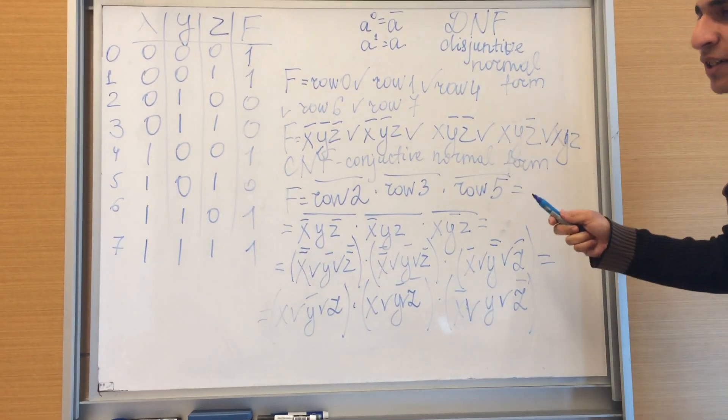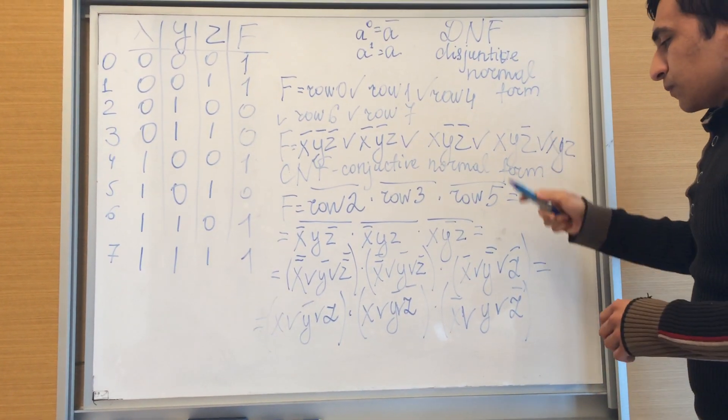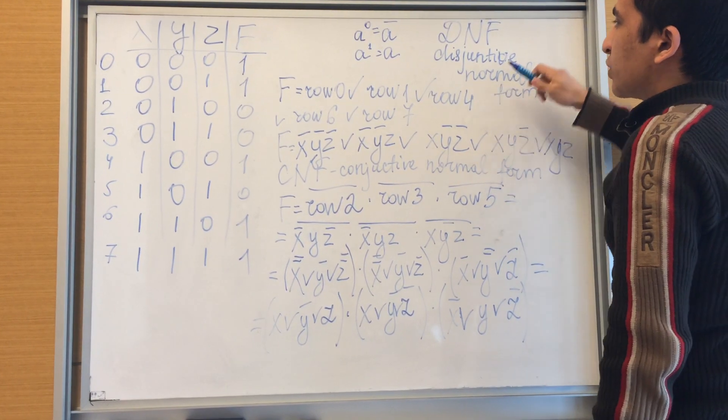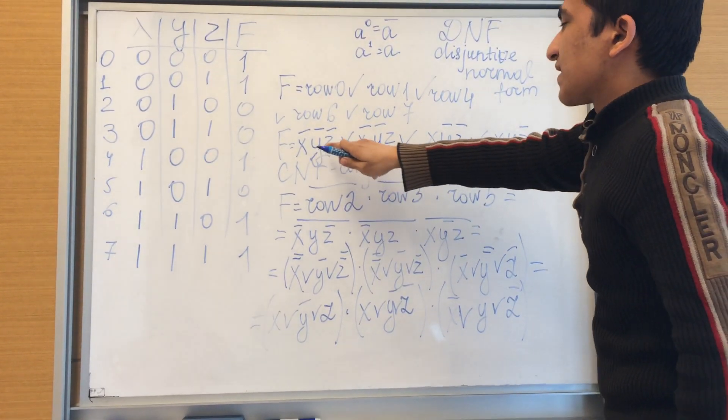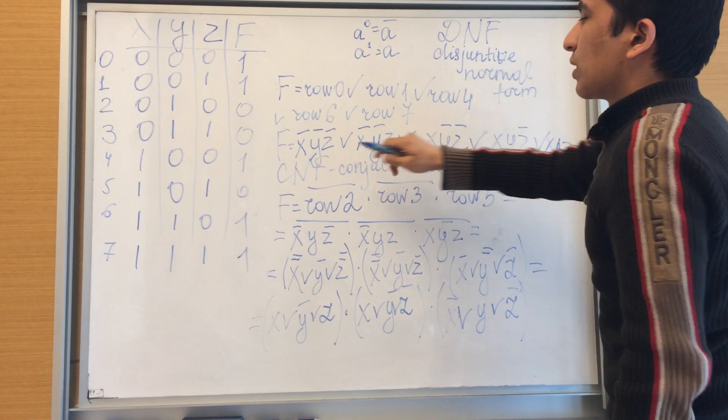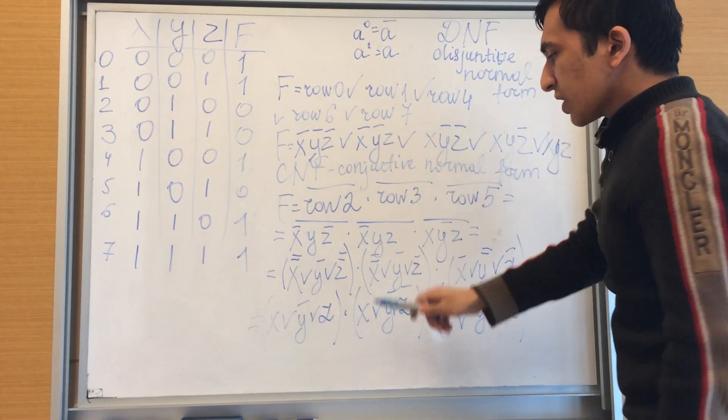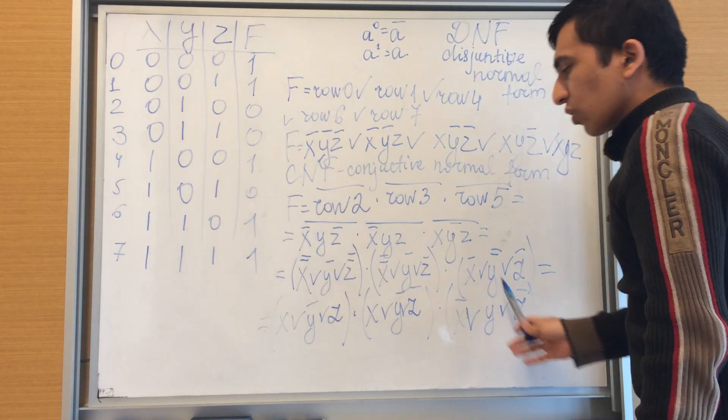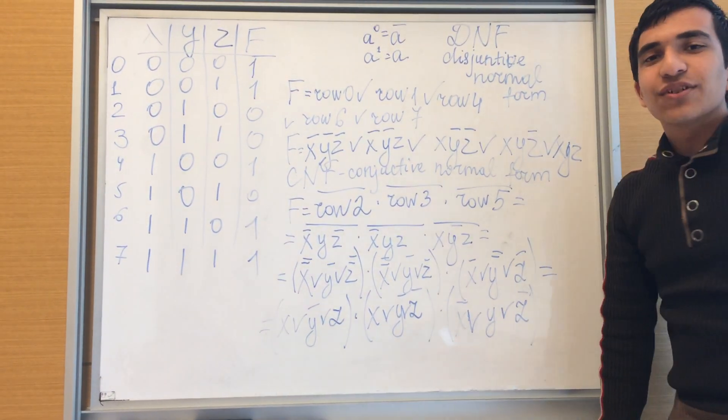Here the guideline: the final result is that DNF is the sum of multiplications, and CNF is multiplication of sums. Thanks. Thanks for watching.